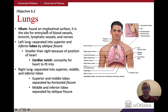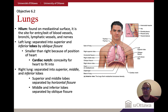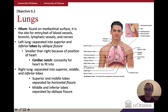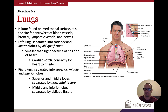The hilum is found on the mediastinal surface and is the area where major blood vessels enter and exit an organ — a general anatomical term also seen with the spleen. The right lung has three lobes and the left lung has two lobes. The left lung also has a cardiac notch, which accommodates the heart in the mediastinum.